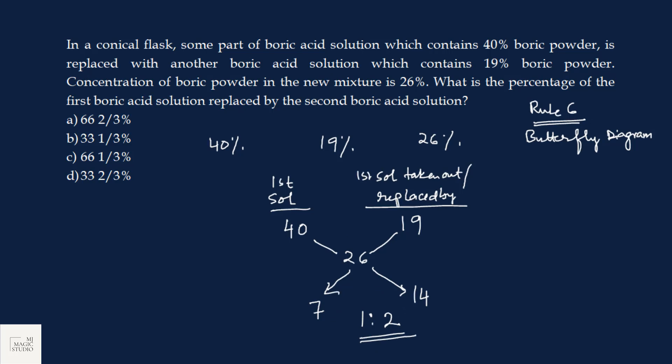So, this 1 is to 2, the first value in the ratio gives how much is left from the first solution. And the second value in the ratio gives how much is taken out and replaced by the second solution. So, how much is replaced by the second solution of the first solution is 2 parts out of 1 plus 2, that is 3 parts. That is 2 third of the original which is 66 2 by 3 percentage. 2 third into 100. 2 by 3 into 100 is 66 2 by 3 percentage. Option A is the pick.